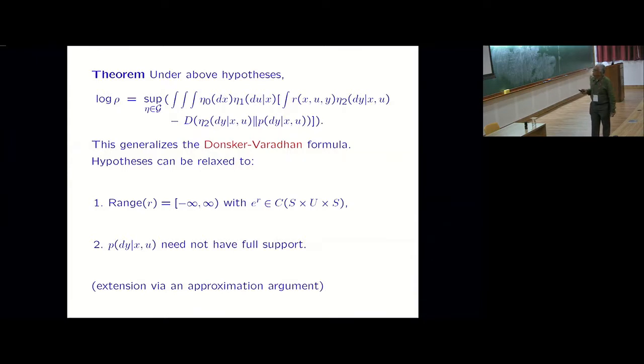As I said, the hypothesis can be relaxed. This was something I wouldn't have bothered about. It was driven by Venkat Anantharam. You can allow minus infinity as a value. This need not have full support. The extension is basically, you approximate. If it doesn't have full support, you approximate by the sequence p_epsilon given x u where for each positive epsilon it has full support, and let epsilon go to 0 and push it. There is a dual in this setting. The proof of this goes through that.